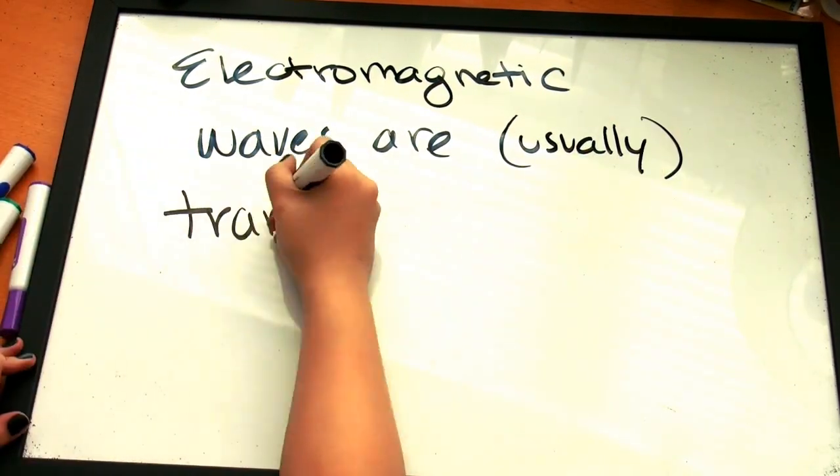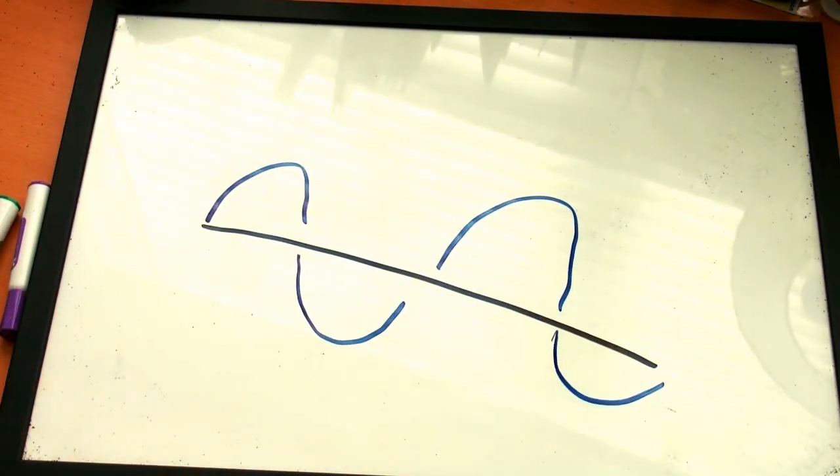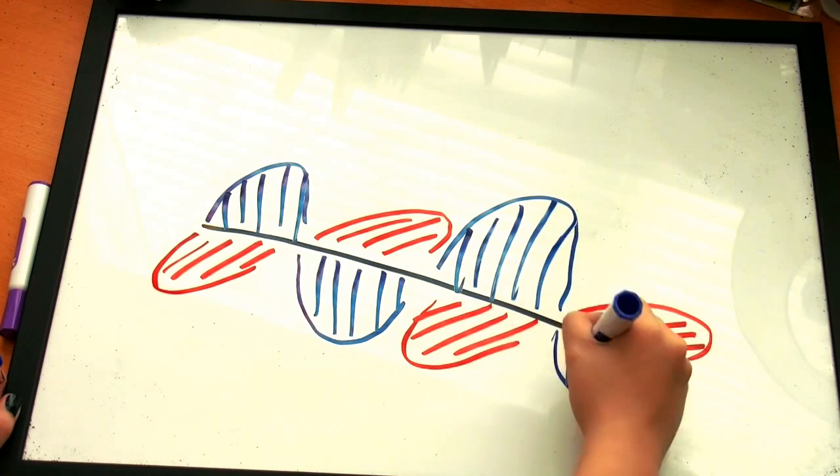Electromagnetic waves, however, are always transverse when in free space. This can be seen in the following graph. The electric field and magnetic field are perpendicular to each other, as well as to the direction of propagation.